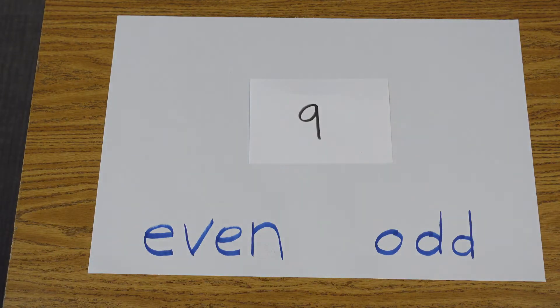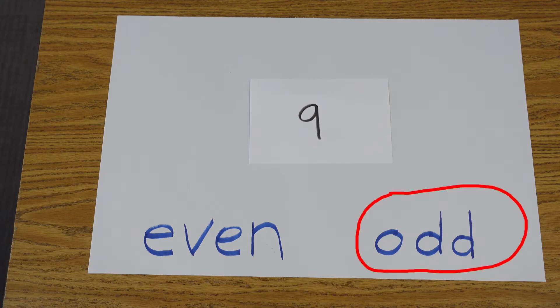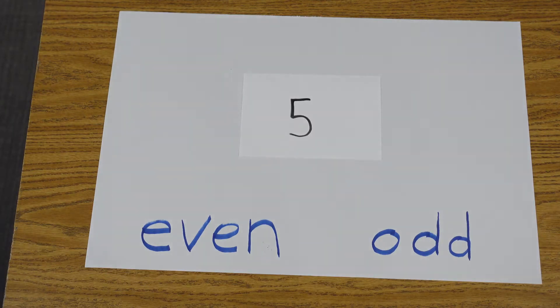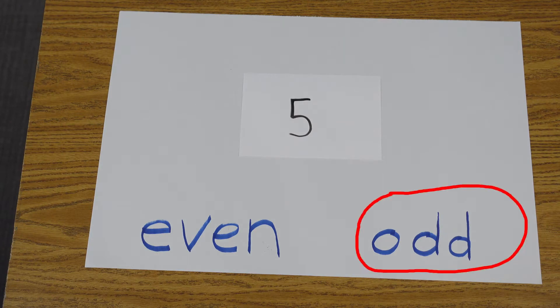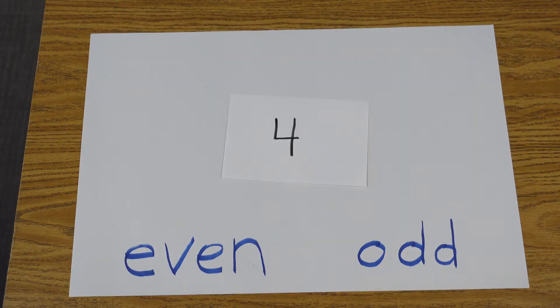What do you think 9 is? Awesome. 9 is an odd number. What do you think 5 is? Super. 5 is an odd number. What do you think the number 4 is? That's right. It's an even number.